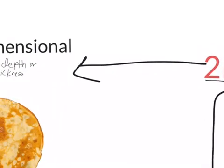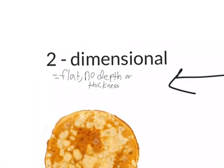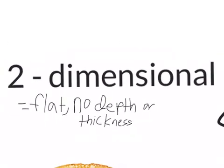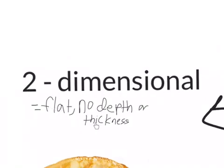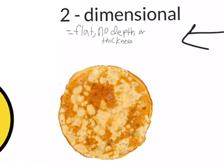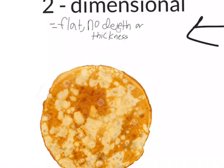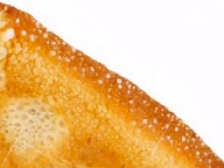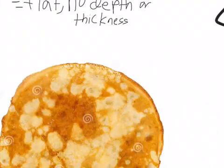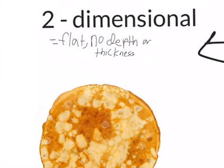So 2D shapes basically means two-dimensional or flat, no depth or thickness. For example, some examples of 2D shapes are a pancake, because in here, it's flat and there's no depth or thickness. So you can't really see any depth here, and it's not really thick in this case, so this would be 2D. This pancake is a two-dimensional shape.